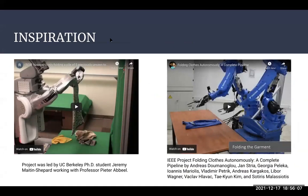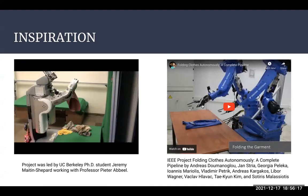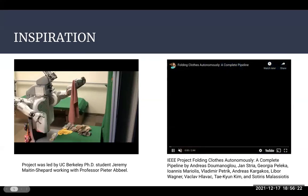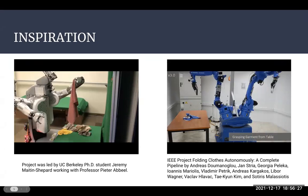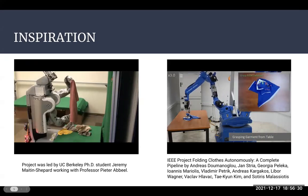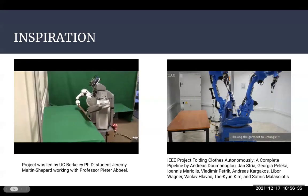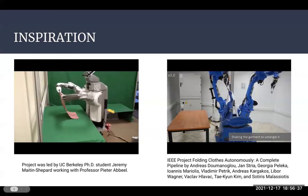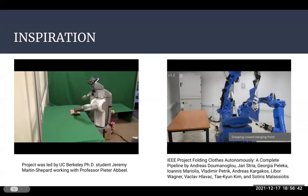So the inspiration for our project was twofold. One was a project that was led by a UC Berkeley PhD student named Jeremy Maitin-Shepard, along with Professor Abbeel. And then we also drew inspiration from an IEEE project about folding clothes autonomously. And you can see in both of these, they use different robots to fold clothes and they use two arms in order to do a variety of different motions, as well as kind of detect the robot before conducting the full fold.